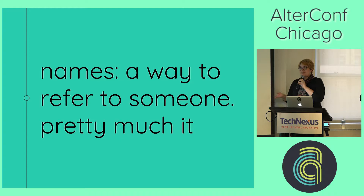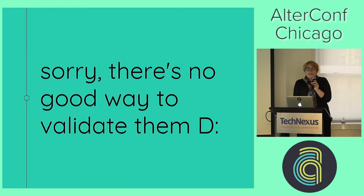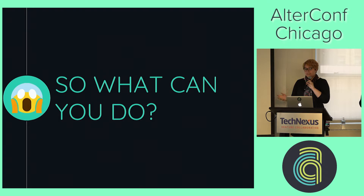Basically, names are a way to refer to someone, and that's pretty much all you can assume about a name — it's something that you could possibly call someone. It's very basic and very vague, and that's kind of disappointing, but that's basically all you can do without making some incorrect premises that lock someone out somewhere. There's not really a good way to validate what is a name. Names are nigh impossible to pin down, but you also want to make sure that you have data that's useful and serves the intended purpose.